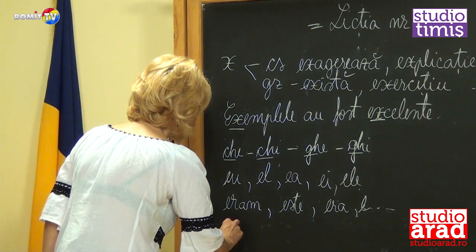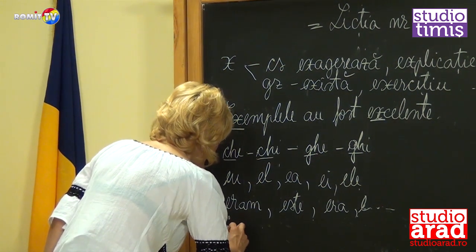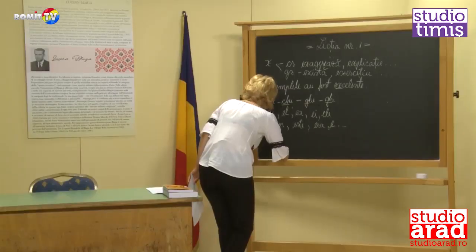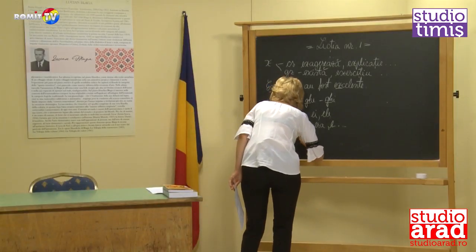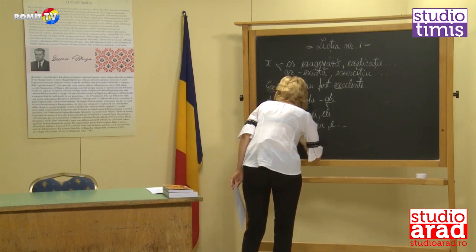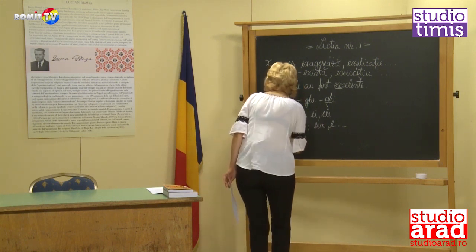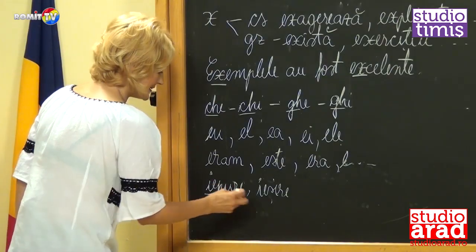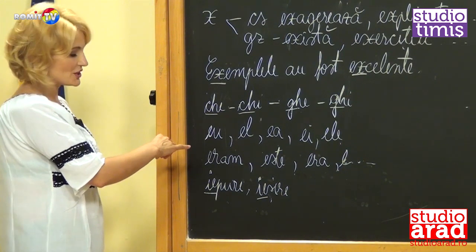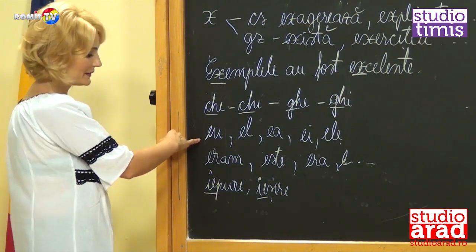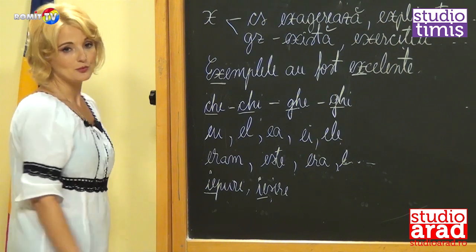On the other hand, when we say 'iepure,' we must write the I. 'Iepure,' 'ieșire' — in these cases the I is written. So the problem of the I that is heard but not written appears only — I repeat — in the personal pronoun and the verb 'a fi.'